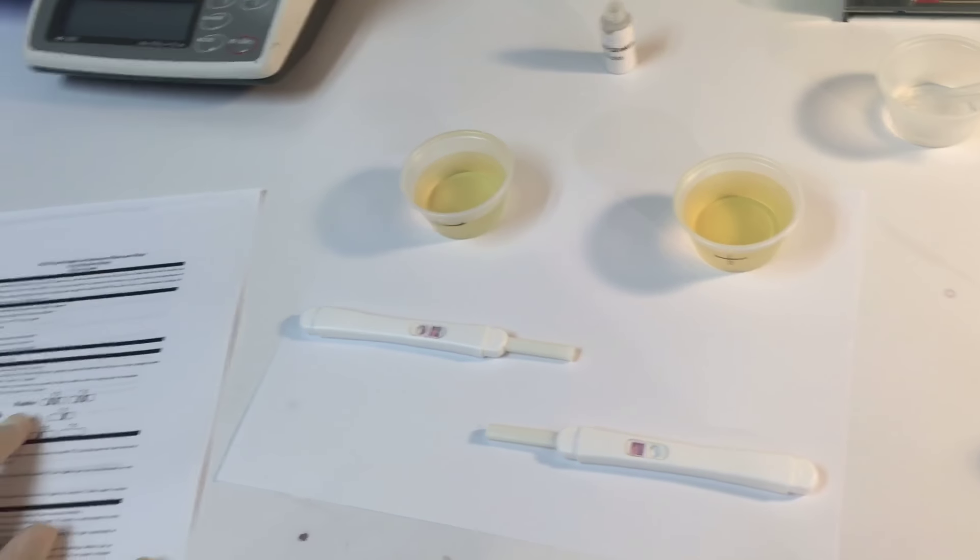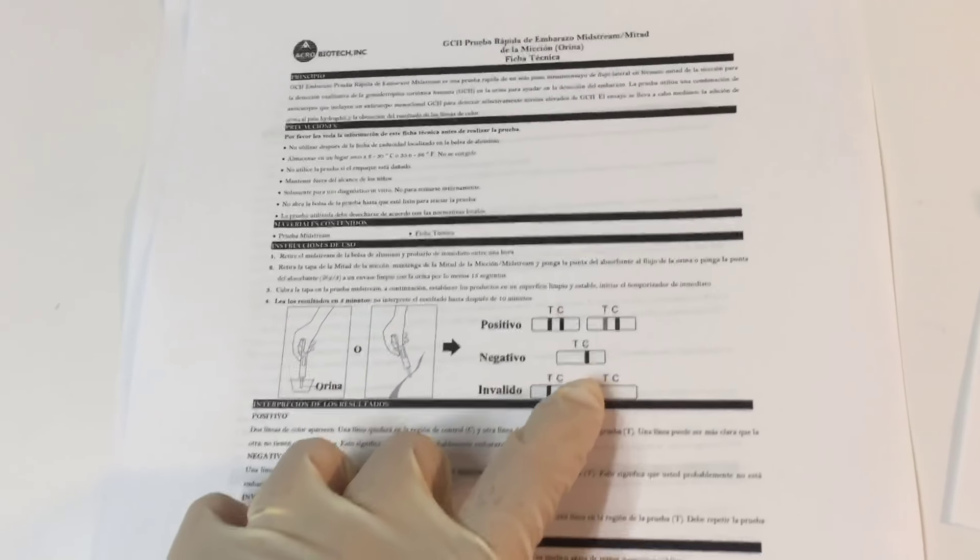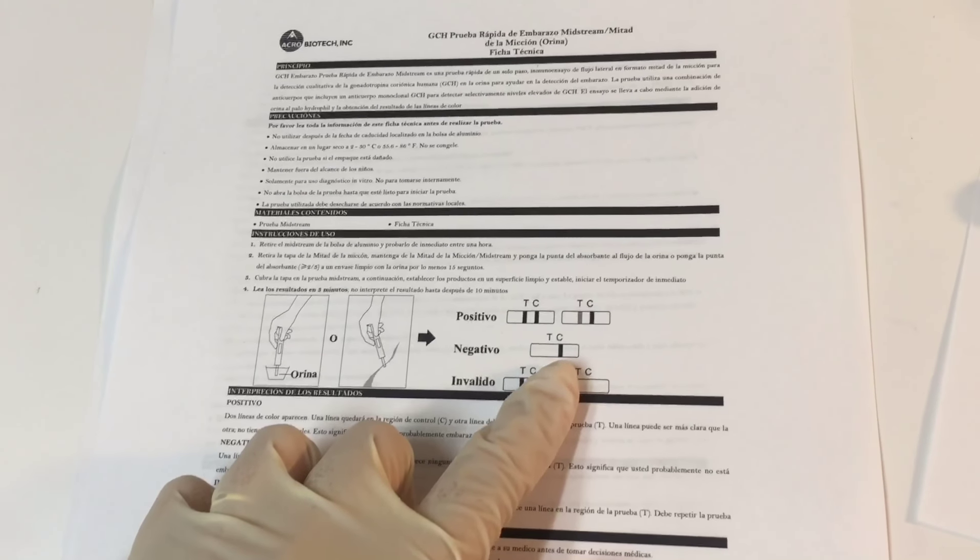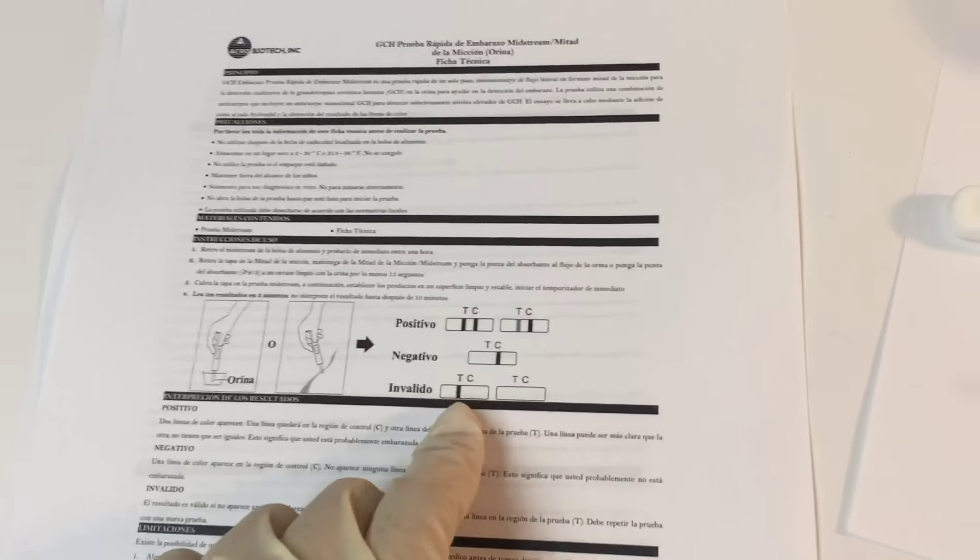So as we can see, if we have two lines, that means it's positive. If we only have one, the control line, that means it's negative. The control line is very important because it's the one that shows that the test is well done, or if it's not there, that we didn't do it well.